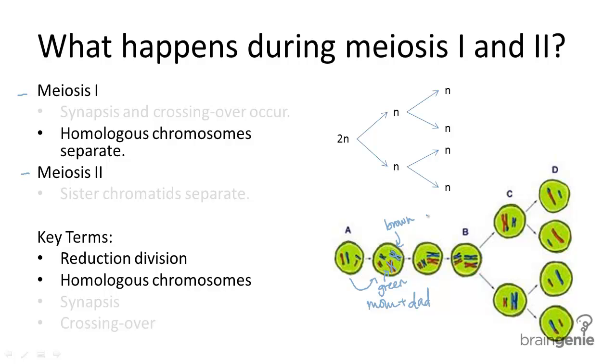One comes from the mom, one from the dad, but they code for different variations on a specific trait. When these separate, cells go from a diploid count to a haploid count.